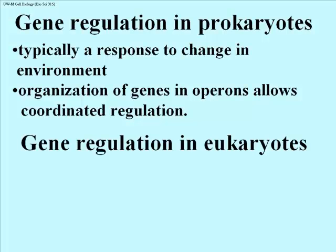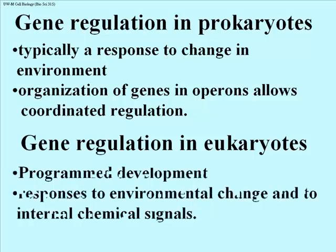Briefly, gene regulation in eukaryotes typically involves changes that are programmed into the organisms' cells as they grow and develop, and as the multi-celled animal becomes more complex. Eukaryotes also respond to environmental change and to chemical signals. In most cases, the chemical signals we respond to are actually inside our bodies, including things like hormones and neurotransmitters.